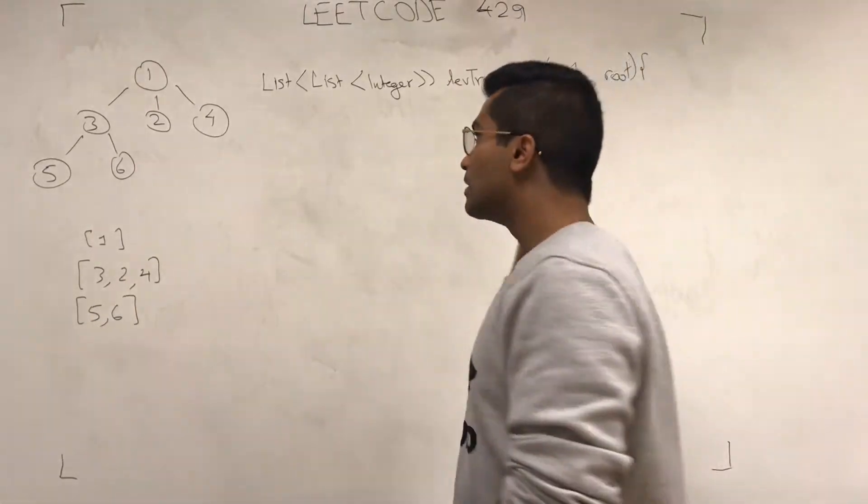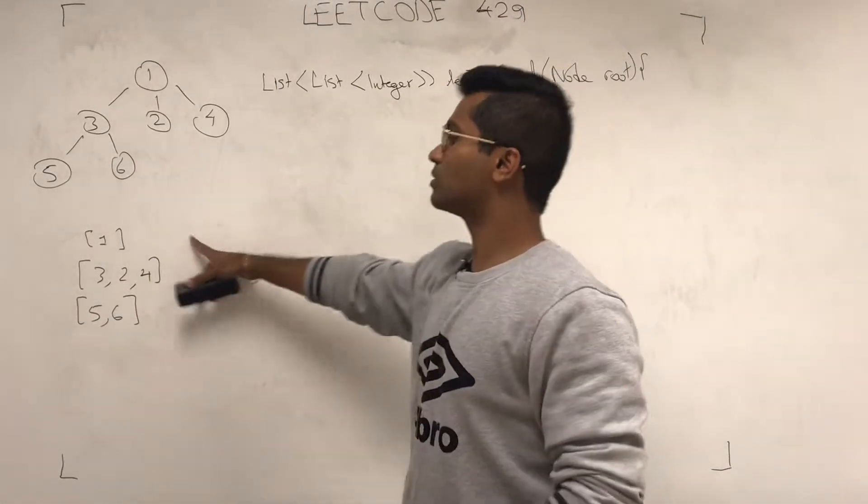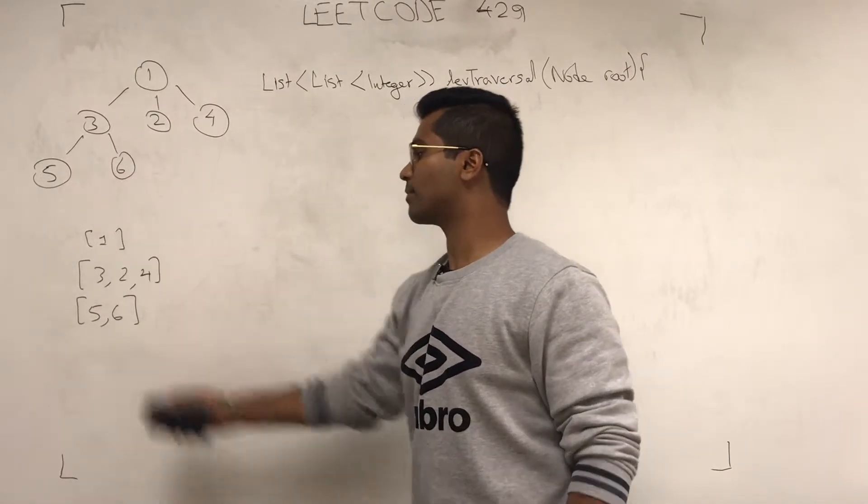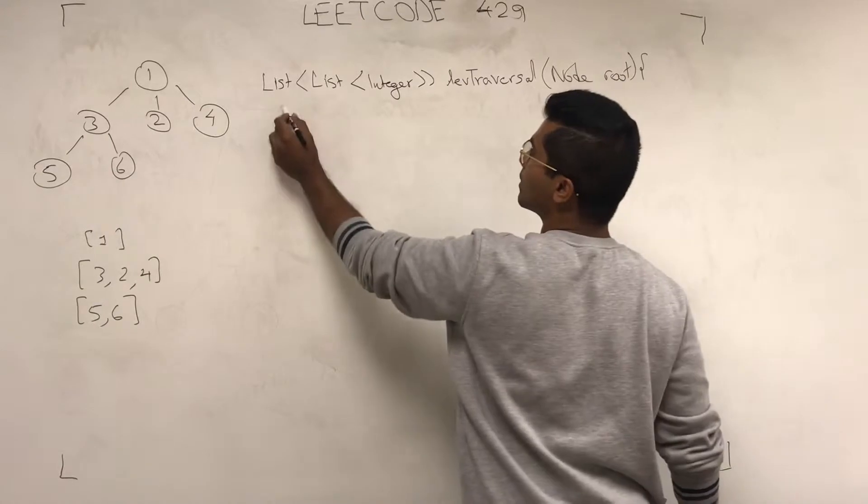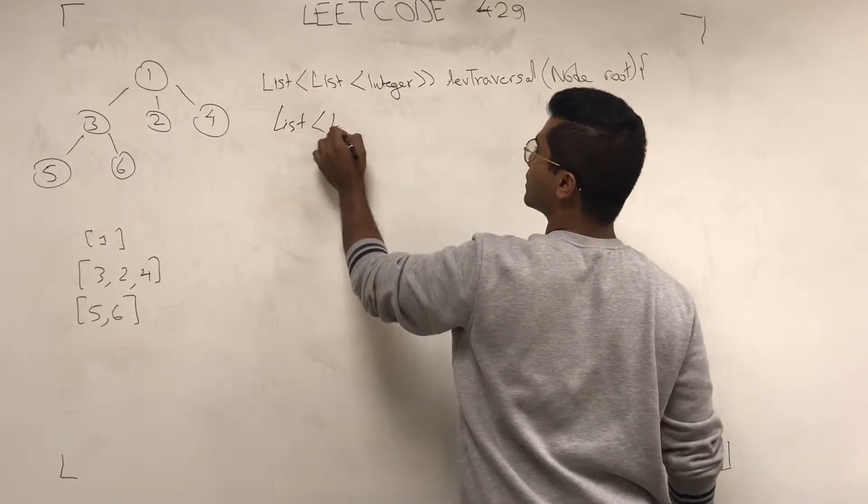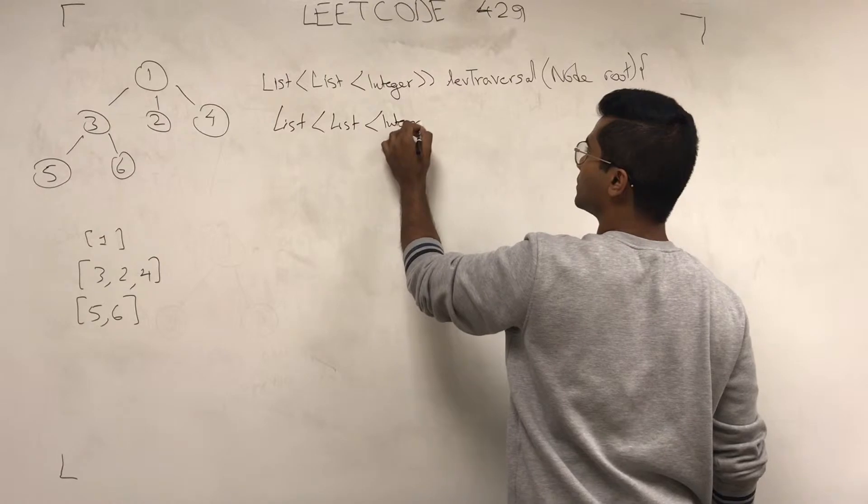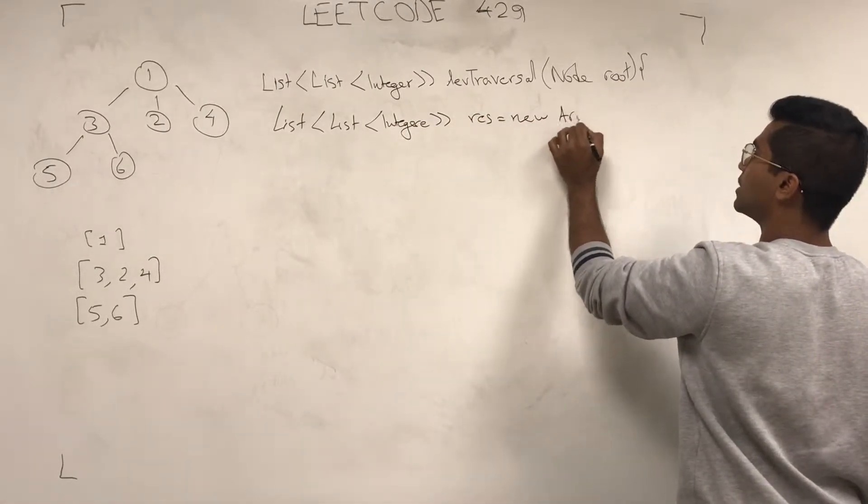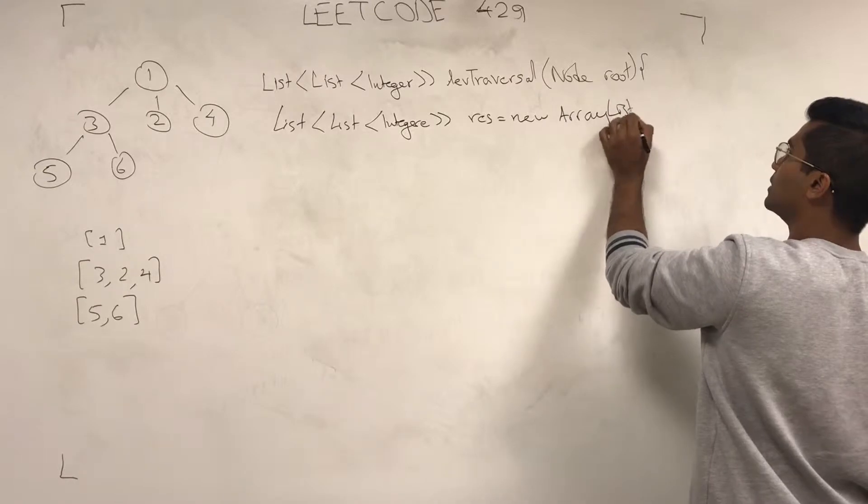So, let's get into it. What they want is a list of lists of integers. So, let's first initialize something that they want in terms of the returning data structure. I'll call it res and we initialize as a new array list.